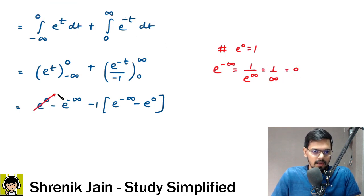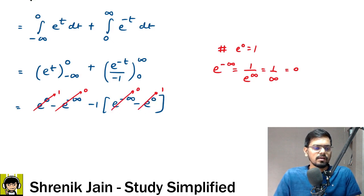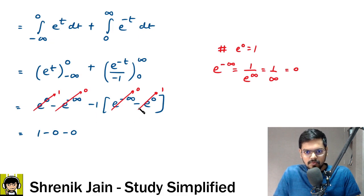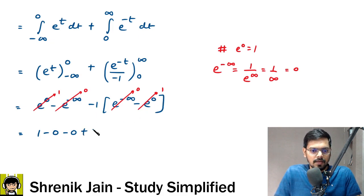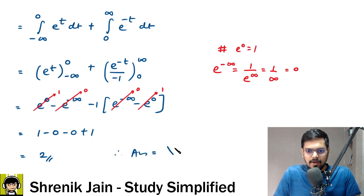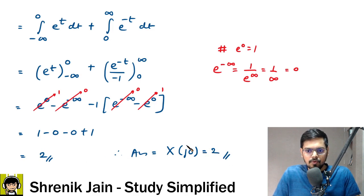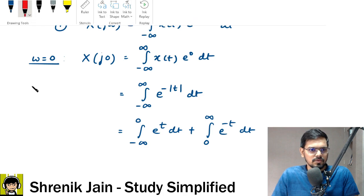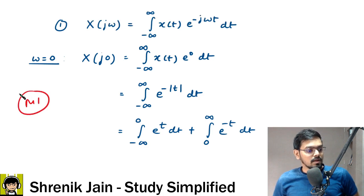Substituting the limits: (1 minus 0) minus 1 times (0 minus 1) gives 1 plus 1, so the final answer is 2. Therefore, capital X(j0) equals 2 — not minus 1, Hethi. This was Method 1. We are not going to follow all these integration steps in the exam.